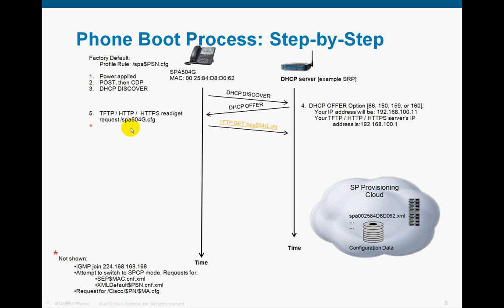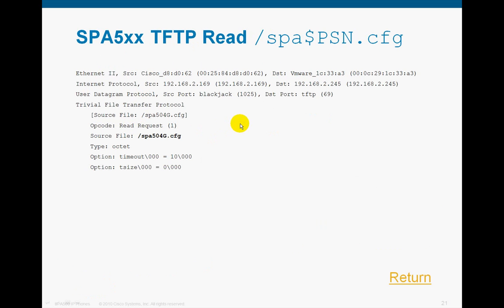Next step: the phone receives the DHCP offer and immediately performs a GET request using the protocol it has been directed to use. In this example I'm showing it with TFTP because it's just a lot easier to see. A factory default phone profile rule is set to SPAR$PSN.CFG, which resolves to /SPAR504G.CFG in the event of a SPAR 504G phone. It's very important to notice there's a slash — that means it's an absolute path. You need that path on your TFTP server. The read request looks for the absolute path and then the file name.